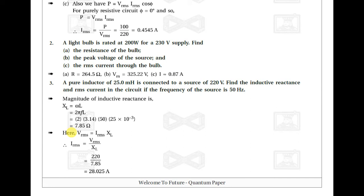Now, Vrms = Irms × XL, so Irms = Vrms / XL = 220 / 7.85 = 28.025 ampere. This is the RMS current in the circuit for example number three.